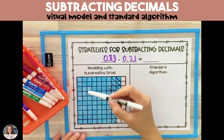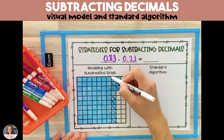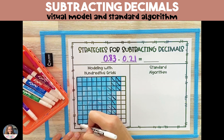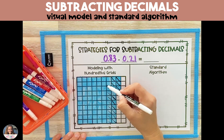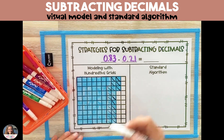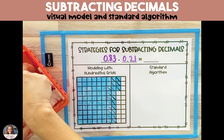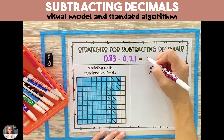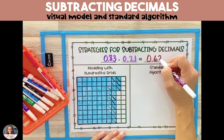Once you've crossed out 21 hundredths, we're going to look at the shaded squares that are not crossed out. There are 62 hundredths that are not crossed out, and that is our final answer.